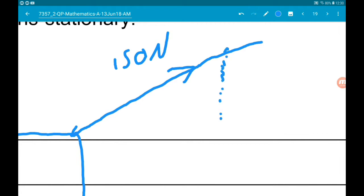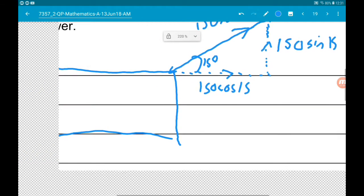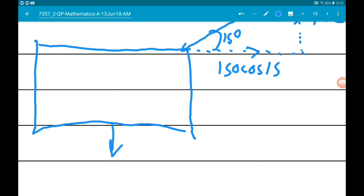So the vertical component and the horizontal component. Now, sine of 15 is the opposite over the hypotenuse. Therefore, the vertical component is 150 sine 15, and cosine of 15 is the adjacent over 150. So the horizontal component is 150 cos 15.